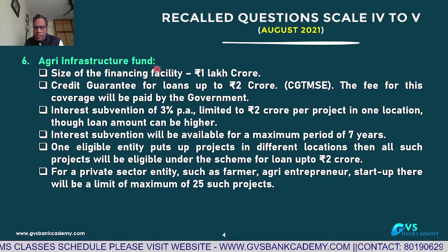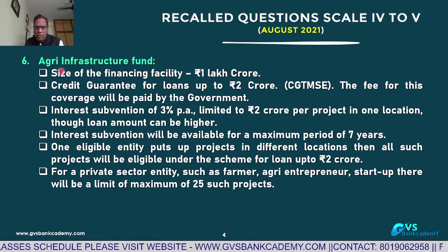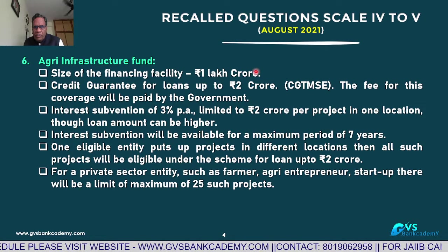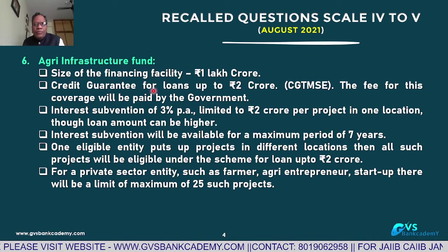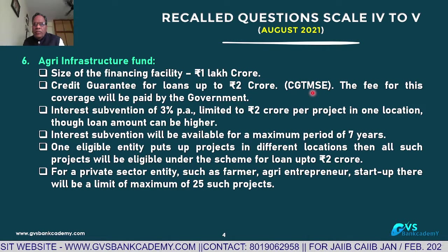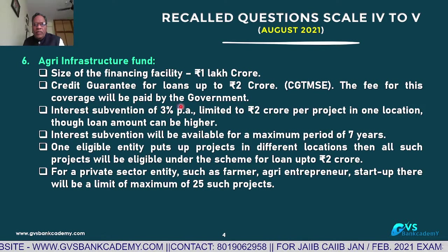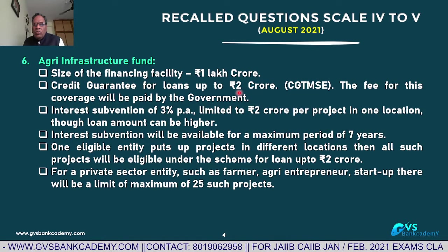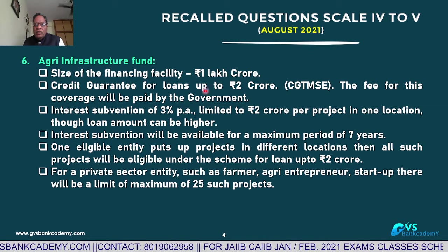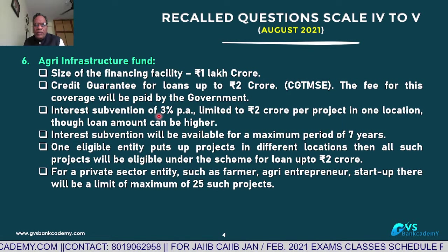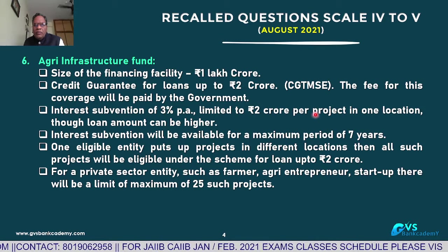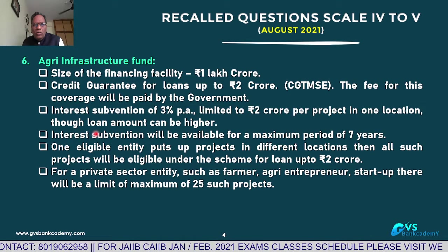Q6: Agriculture Infrastructure Fund — this is a Budget 2020 scheme. Under this scheme, the government allotted up to ₹1 lakh crore for financing activity. Credit guarantee for loans up to ₹2 crores is given by CGTMSE, and the fee for this coverage will be paid by the government. Interest subvention of 3% for primary agricultural credit societies, up to ₹2 crores per project in one location, available up to 7 years, though the loan amount can be higher.